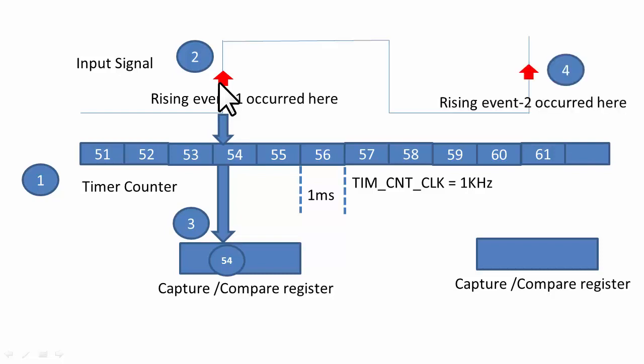When the next rising event of the same signal occurs again, the timer counter value will be copied to the same register, the capture compare register. If you don't save this number you may lose it, so you have to save it. You just take the difference between these two numbers, that is 61 minus 54, which gives 7.